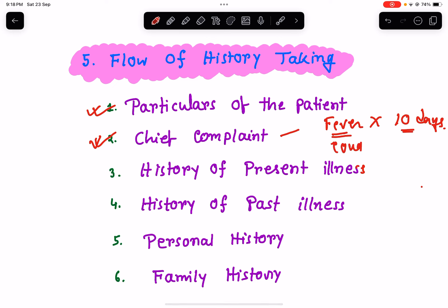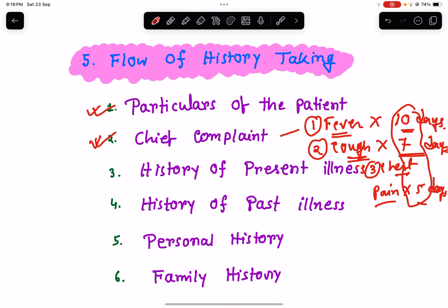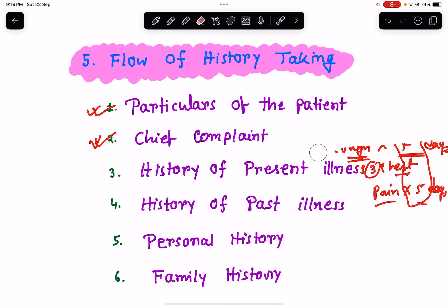For example: fever for the last ten days, cough for the last seven days, chest pain for the last five days. Fever came first, so you write it as the first chief complaint, then cough second, then chest pain third. This is what is meant by chronology — the complaint which has led the patient to come to the hospital and seek the doctor's advice.